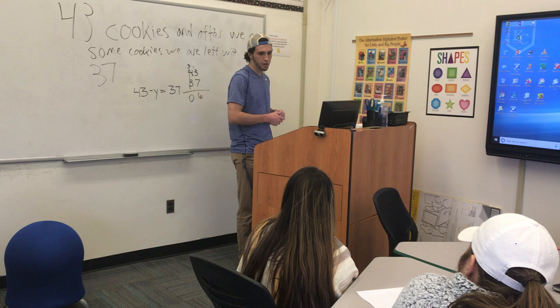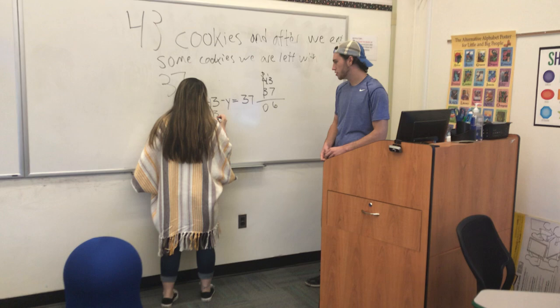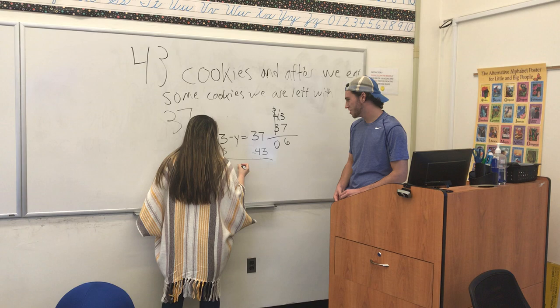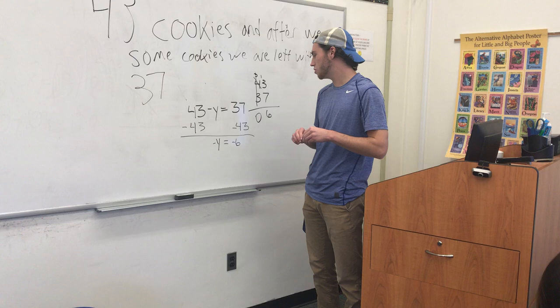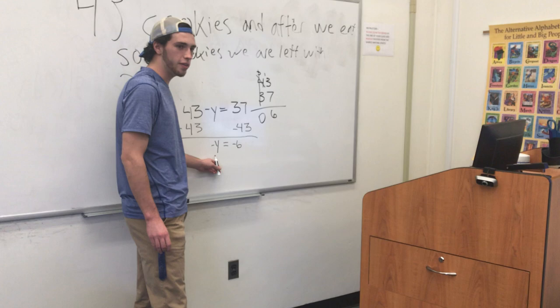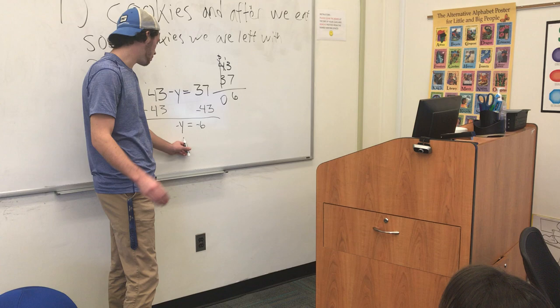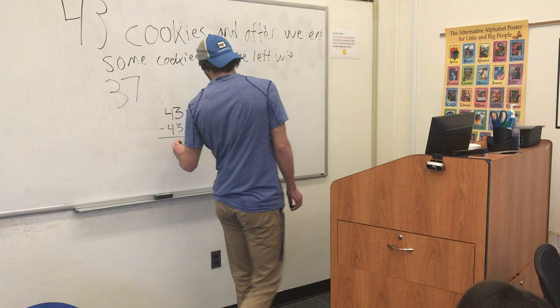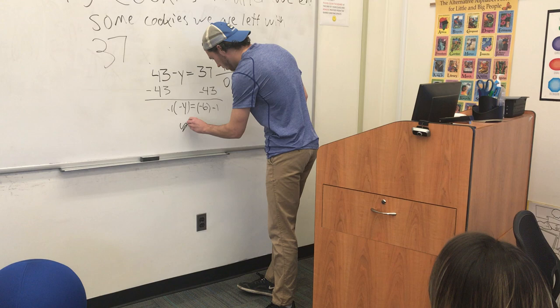Does anyone else want to come up here and use the method where we balance the equation? Minus 43. Good job. That was my bad — I should not have given you guys a negative question. So when we're left with a negative variable, we can't have that. Does anyone know a way we can get rid of this? When you multiply a negative by itself, or by another negative, you get a positive. So what number can you multiply by to get itself? One. Good job — so we're just going to multiply both sides by negative one, and we're going to get y equals 6.